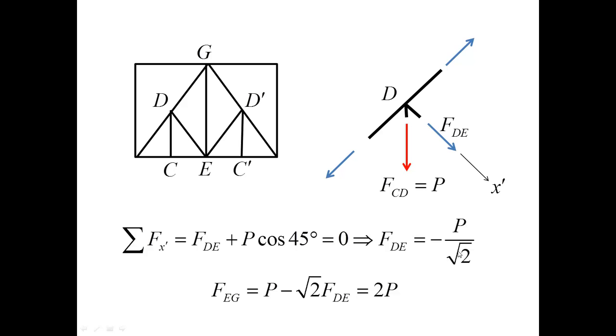From this equation and from this equation we obtain that the force in the bar DE is compression equal to P over square root of two. And now I can go back and evaluate the force in the bar EG simply by substituting the value of FDE in the equation obtained previously and I obtain that the force in EG is tension 2P.